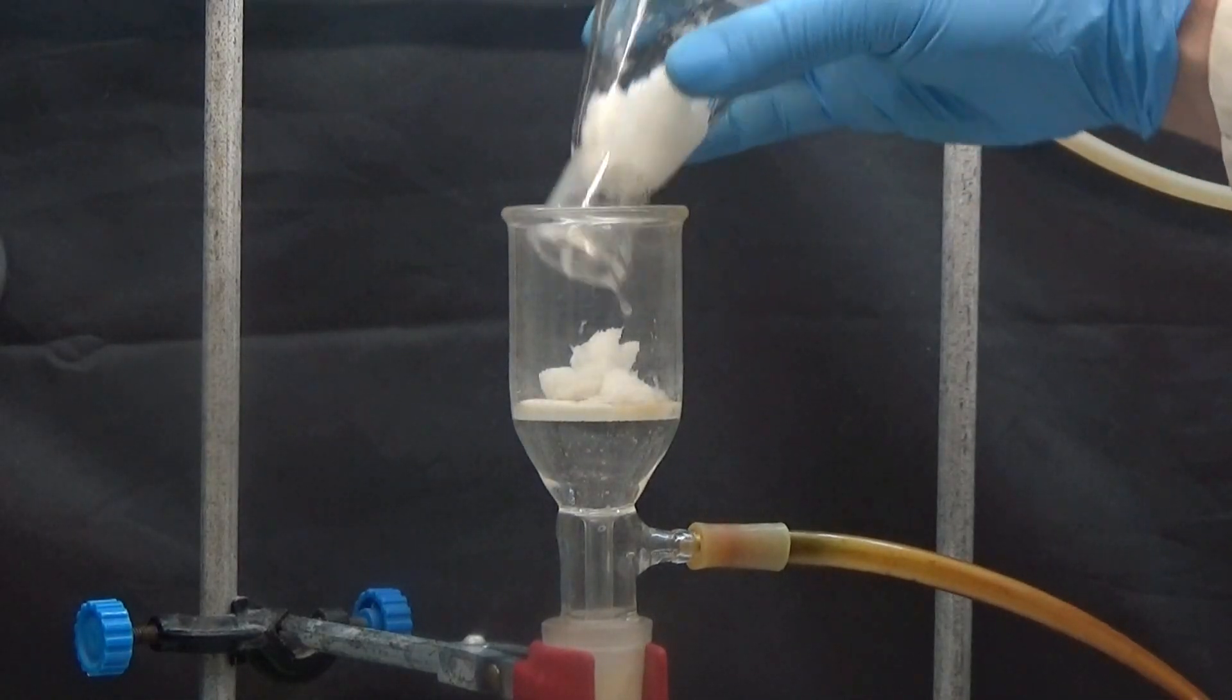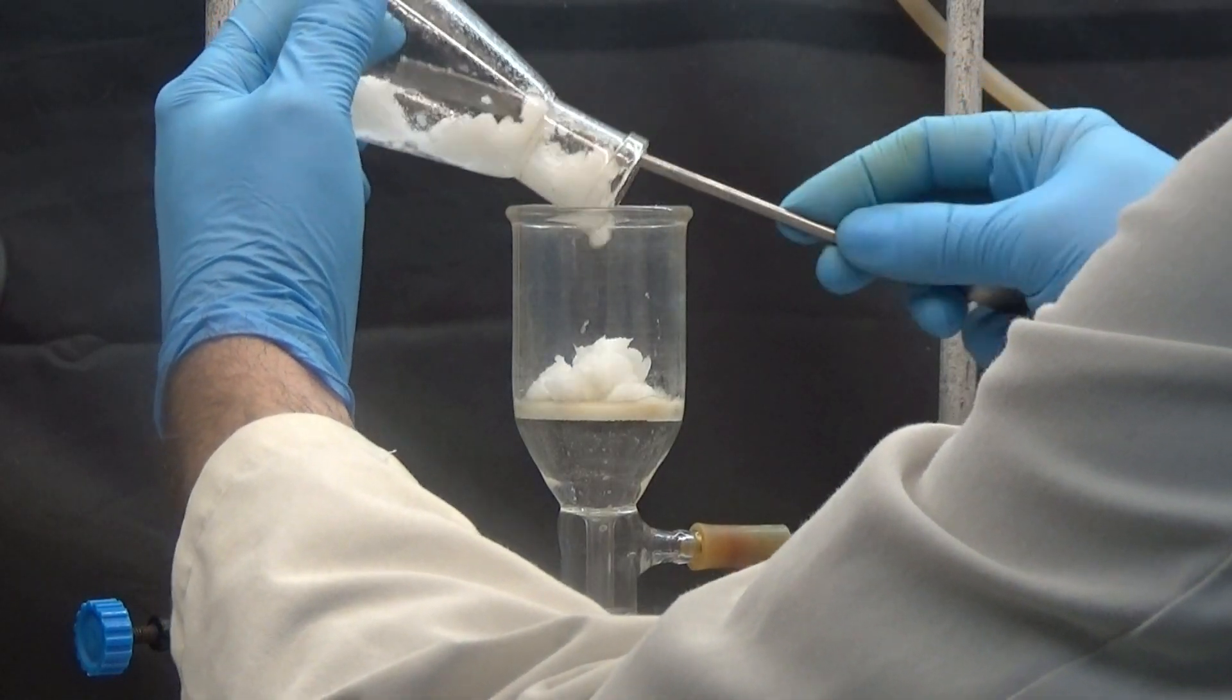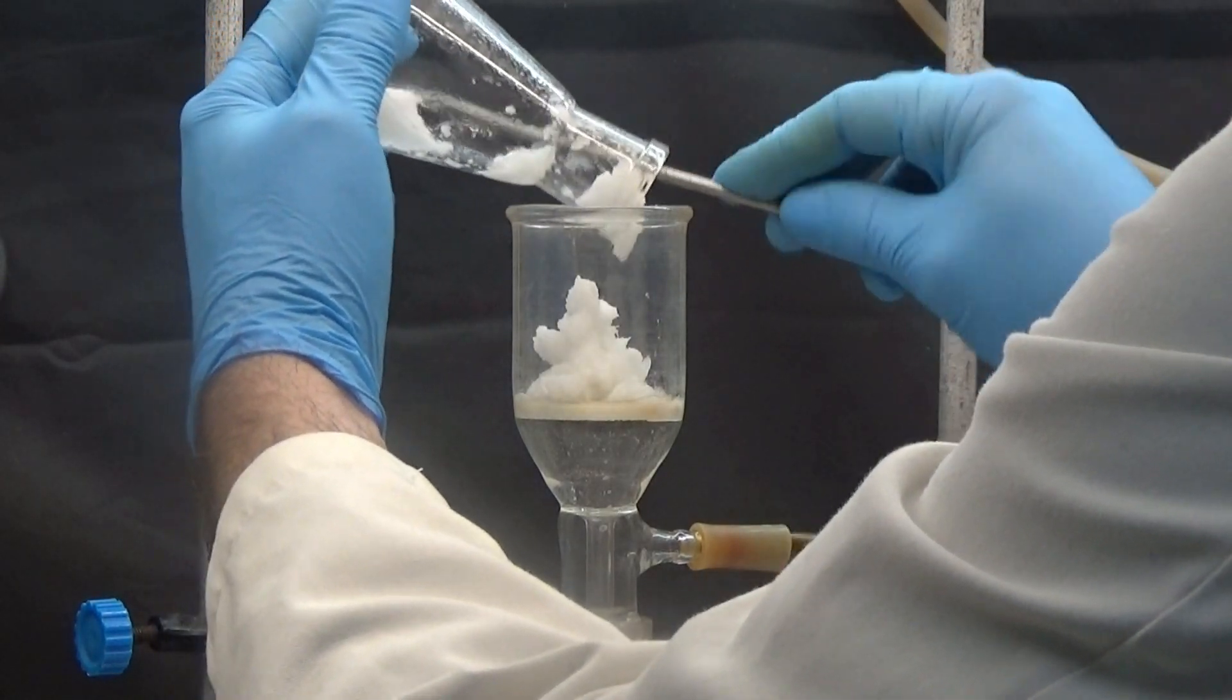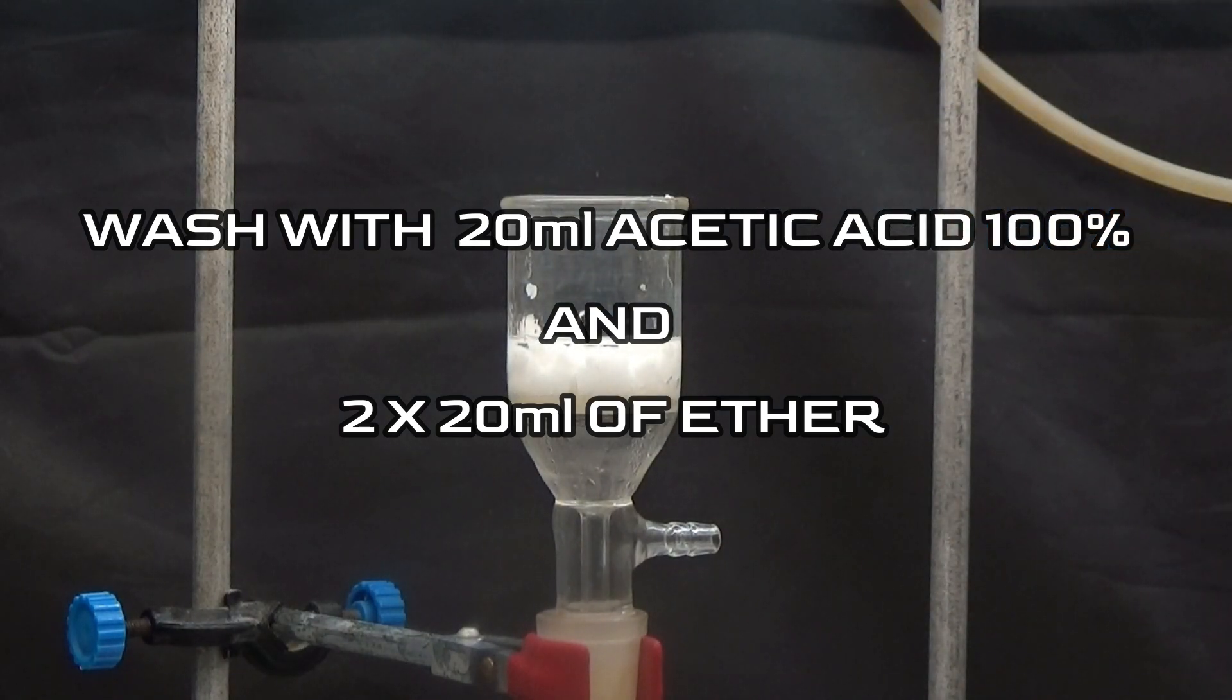Vacuum suction is used to collect it. Wash the solid with 20 milliliters 100% acetic acid and twice with 20 milliliters of ether.